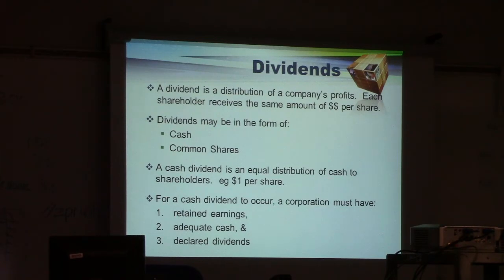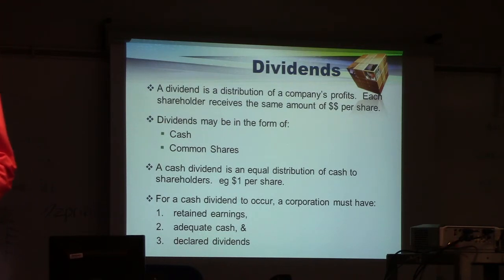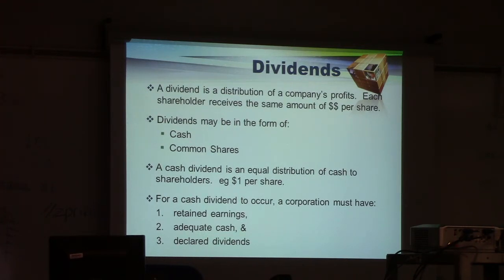A cash dividend is an equal distribution of cash to shareholders — for example, a dollar per share. So if you have a thousand shares, you would get a thousand dollars. If you have five shares, you would get five dollars, because it's a dollar per share.